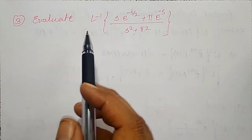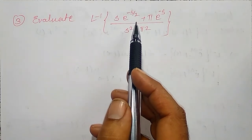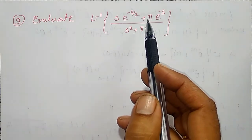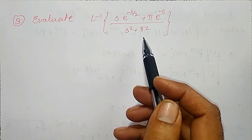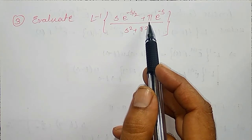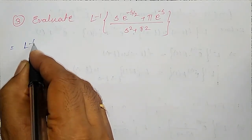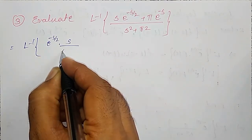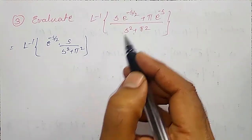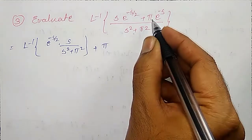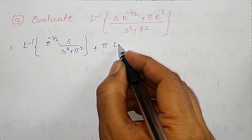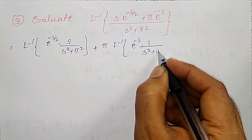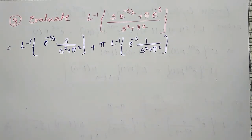Another example: evaluate the inverse Laplace Transform of s times e to the power minus s over 2, plus pi times e to the power minus s, all over s squared plus pi squared. Here, the denominator is in standard form, but there is an addition of terms. I will split it into two terms: the inverse Laplace Transform of e to the power minus s over 2 into s divided by s squared plus pi squared, plus pi times the inverse Laplace Transform of e to the power minus s into 1 divided by s squared plus pi squared.